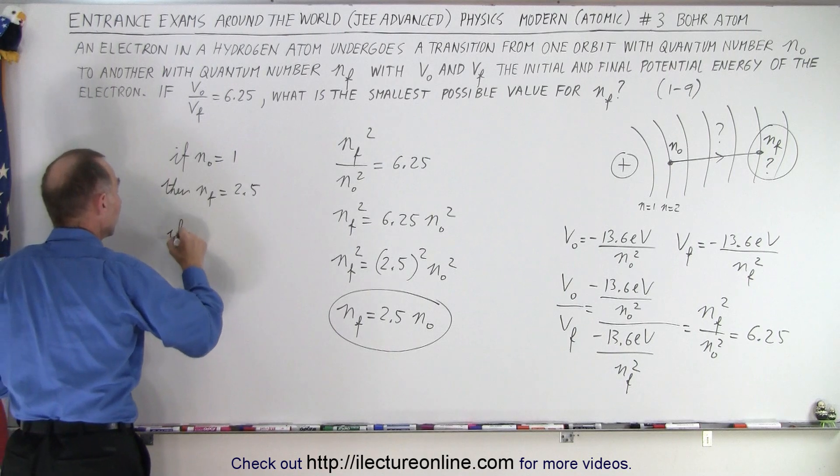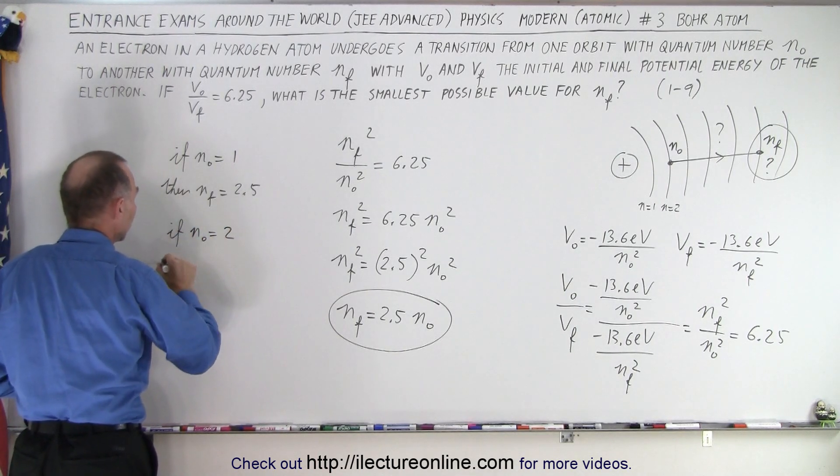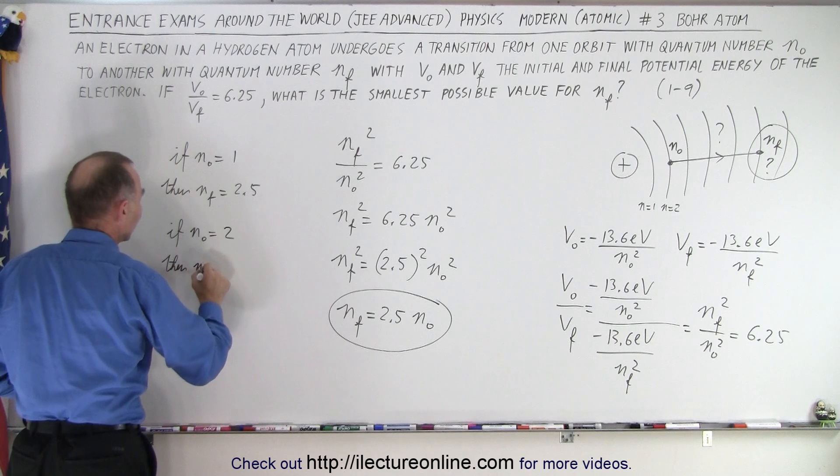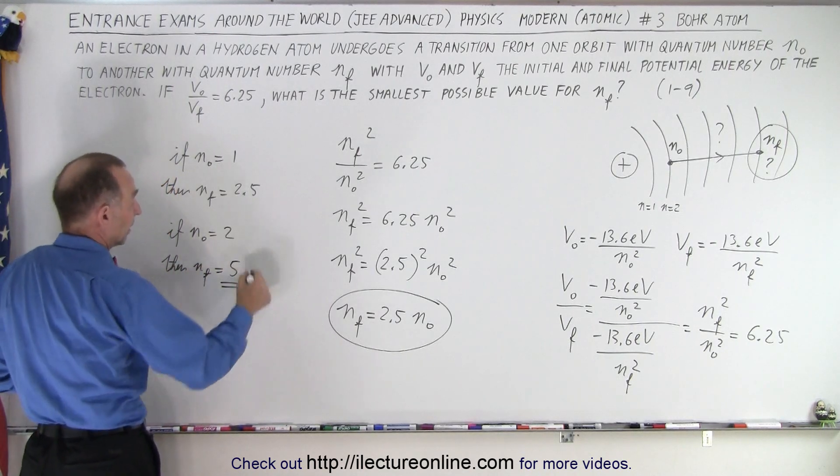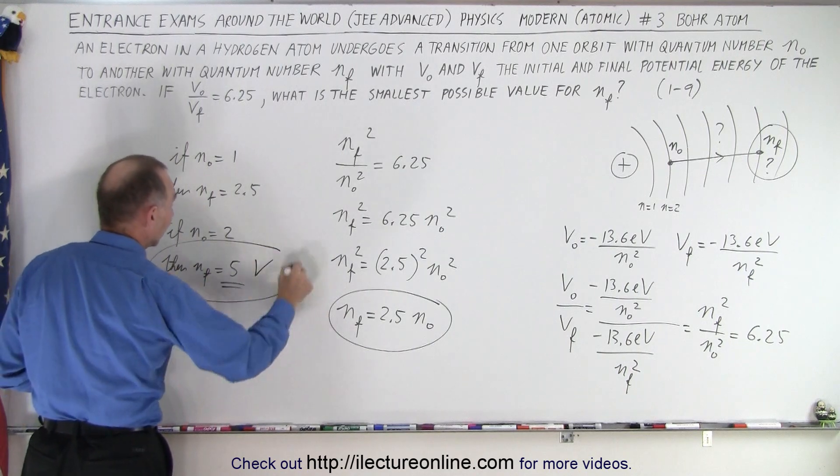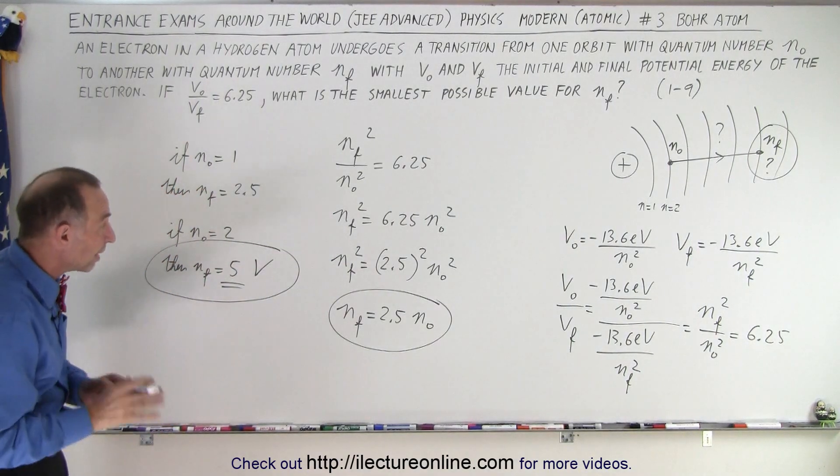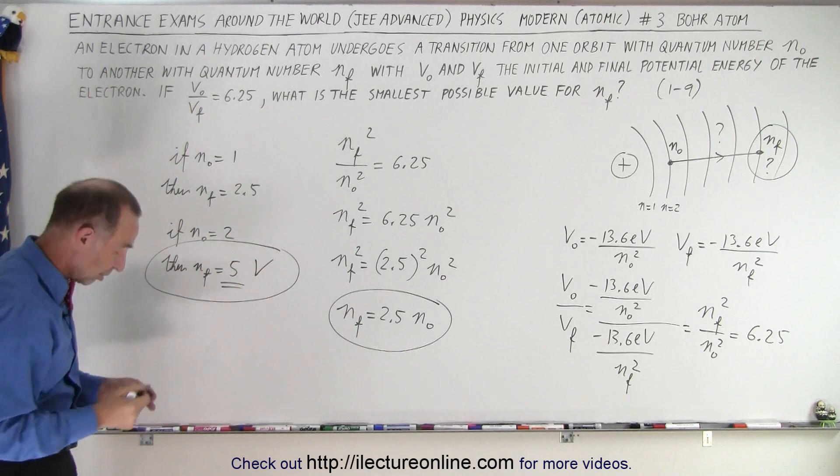So the next one, if n_initial equals 2, then n_final equals 5. And that's an integer. So therefore, that must be the answer. n_final equals 5 is the smallest possible value you can have under these conditions.